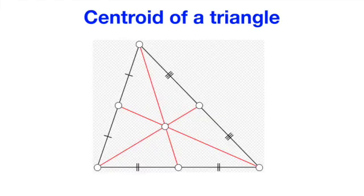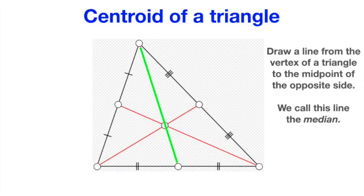Before we investigate the problem of trisection, let's talk about the centroid of a triangle. Given any triangle, we can draw a line connecting the vertex to the midpoint of the opposite side of a triangle. This line is known as the median of the triangle.